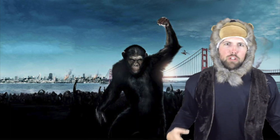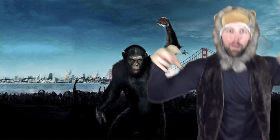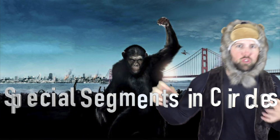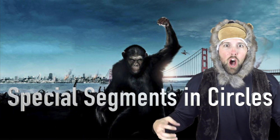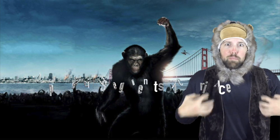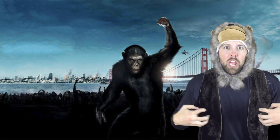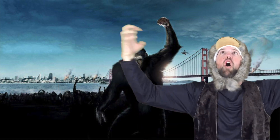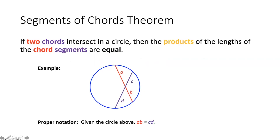It's Caesar and the Circle Ape talking to you about special segments in circles. First thing we're talking about is the segments of chords theorem. That says if two chords intersect in a circle, then the products of the lengths of the chord segments are equal.